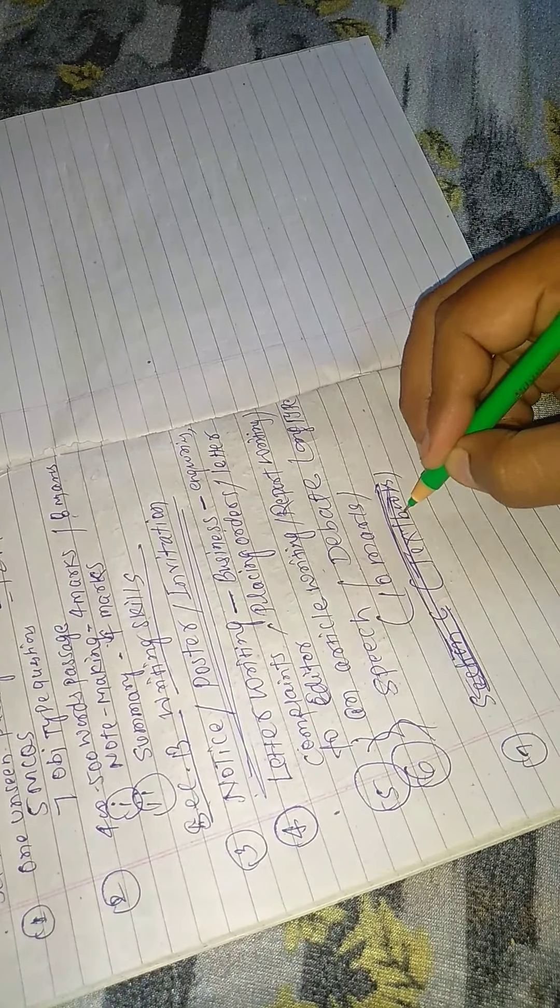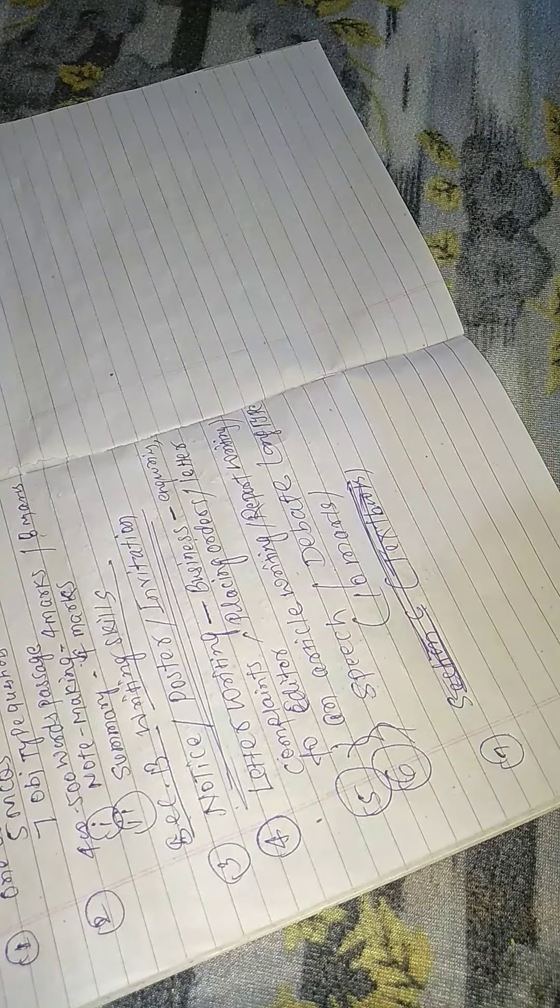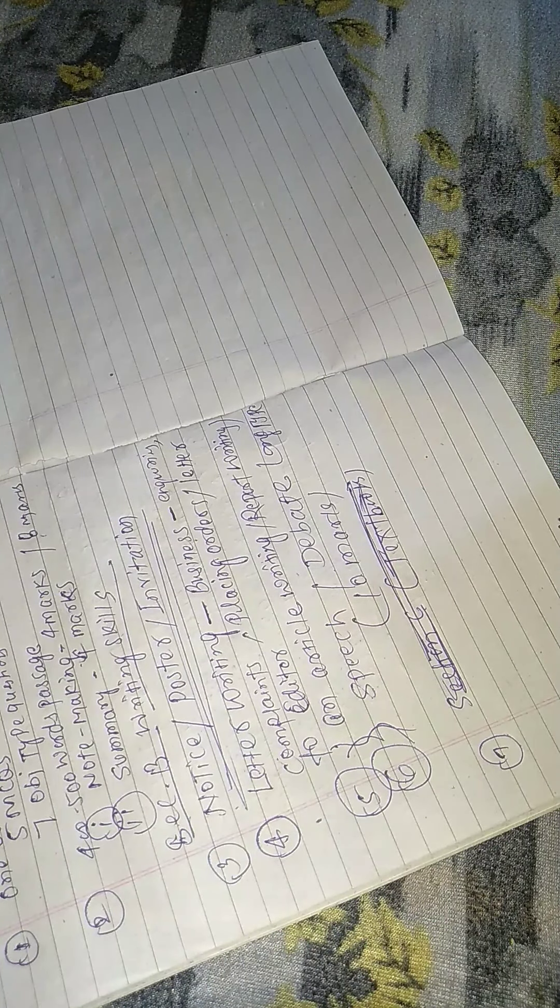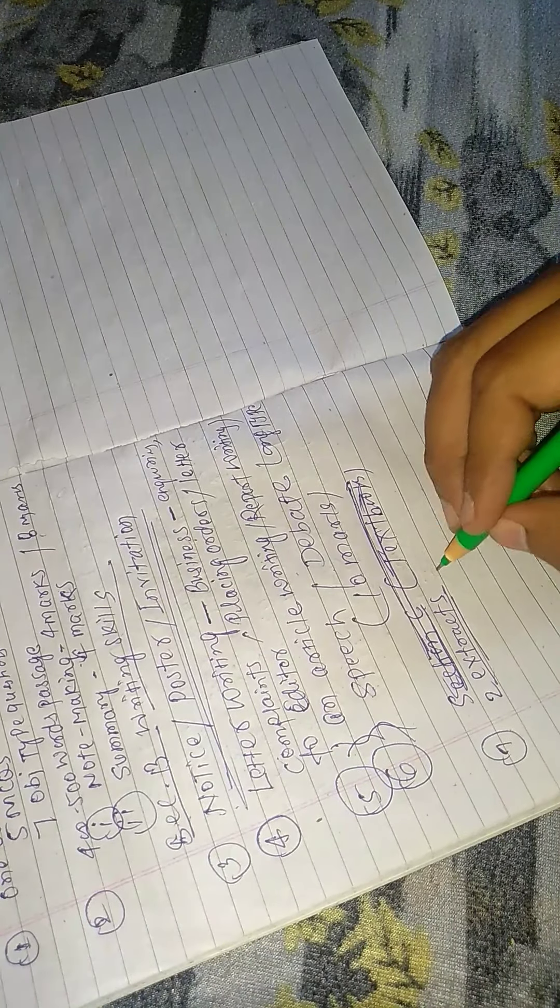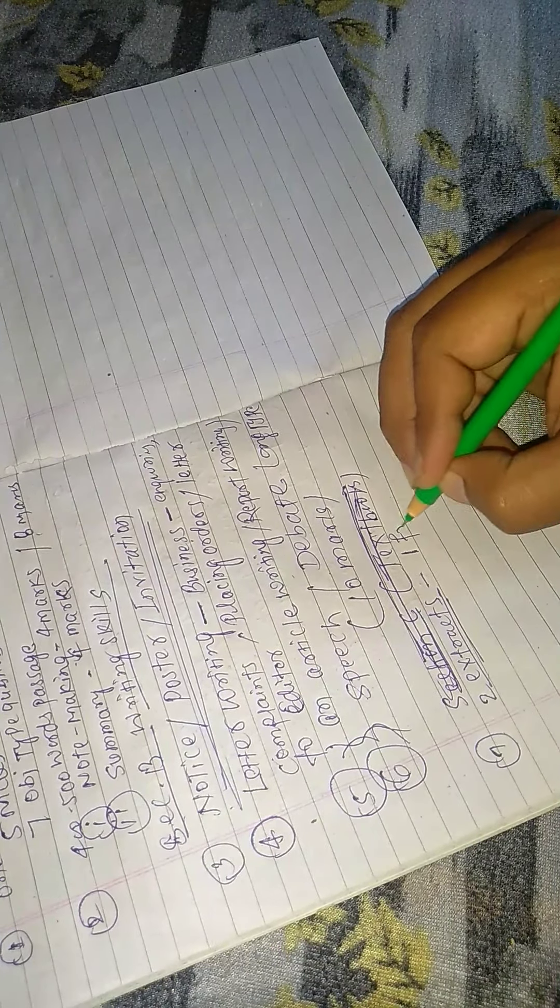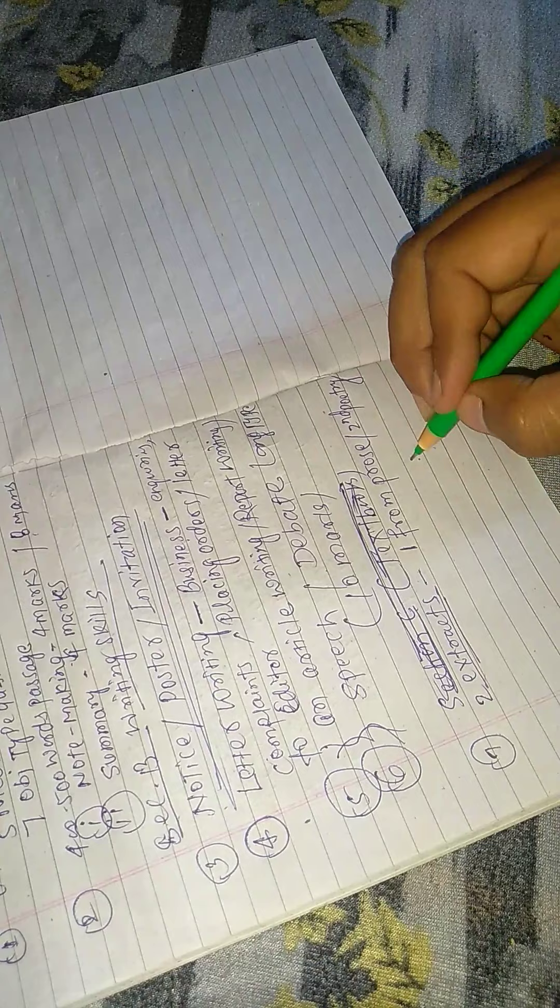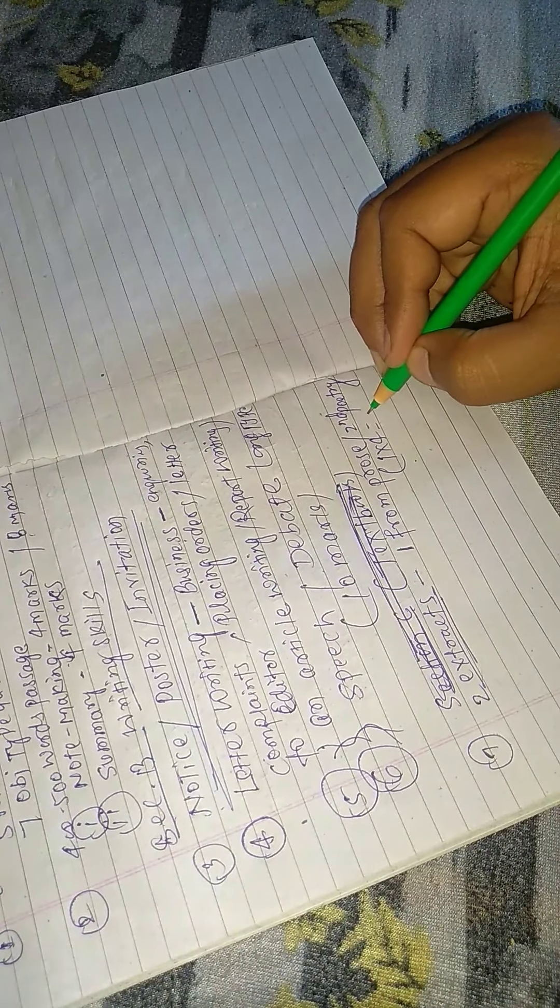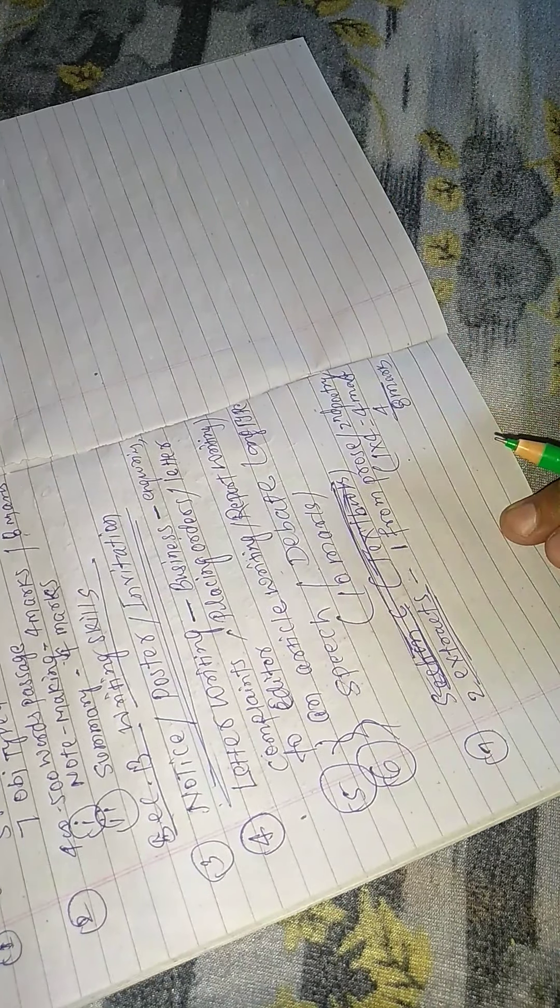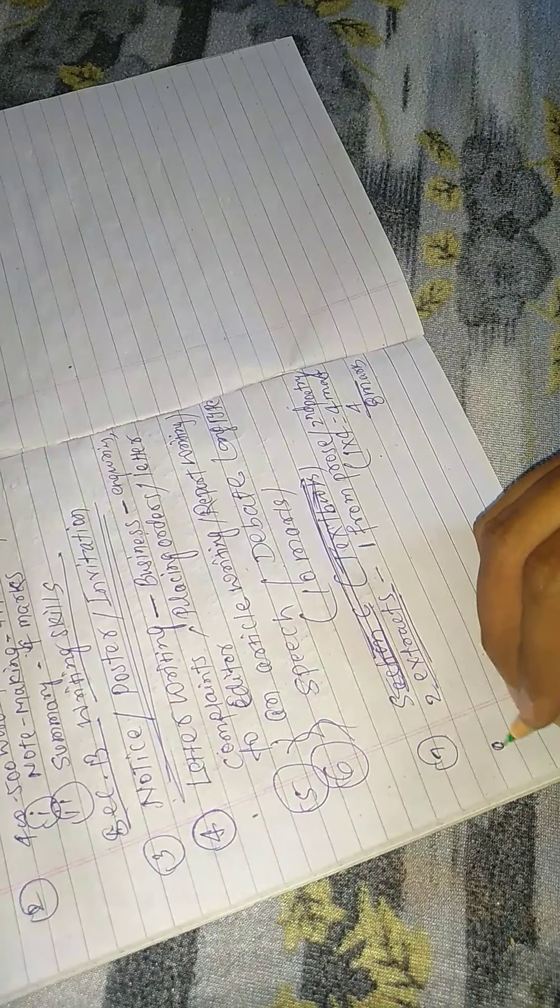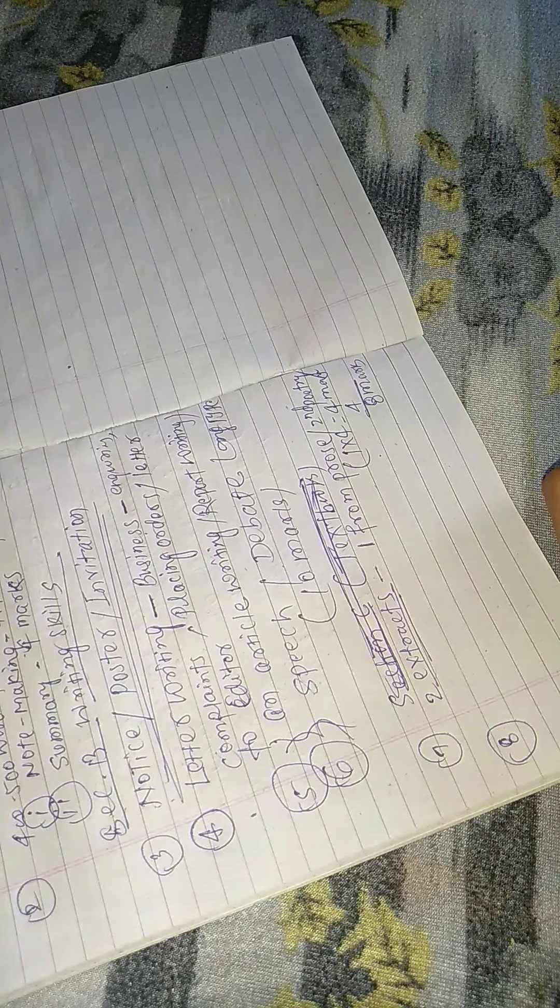Section C: that is of textbook. In this, seventh number question: two extracts, one extract from prose and one extract from poetry. One into four equals four marks, two into four equals eight marks.